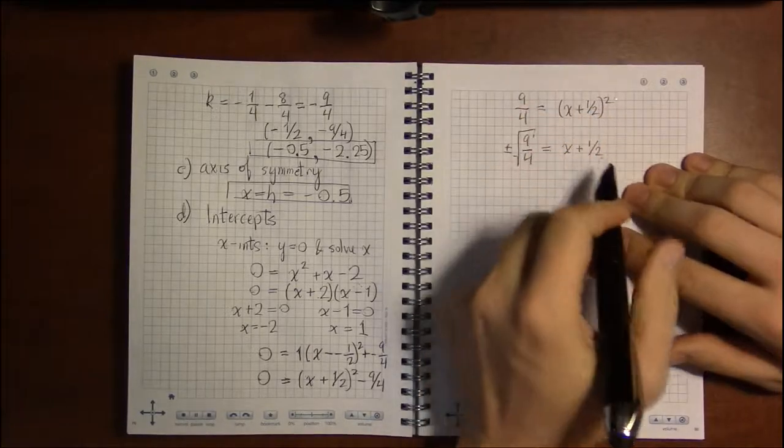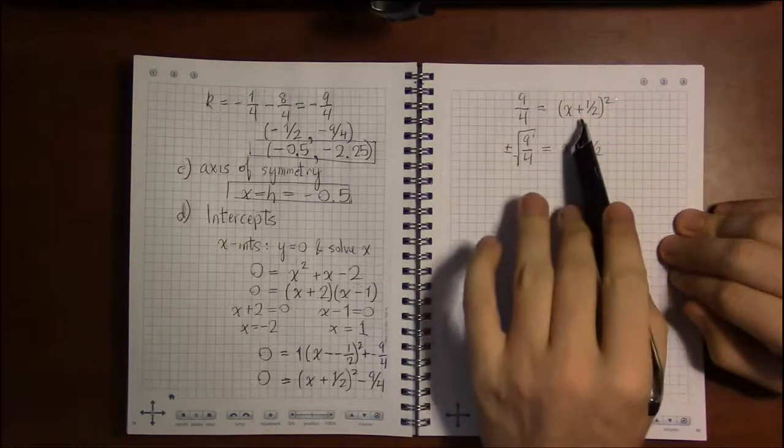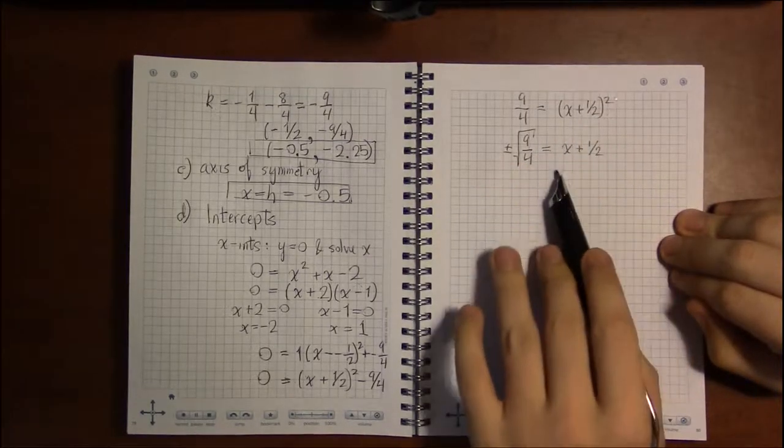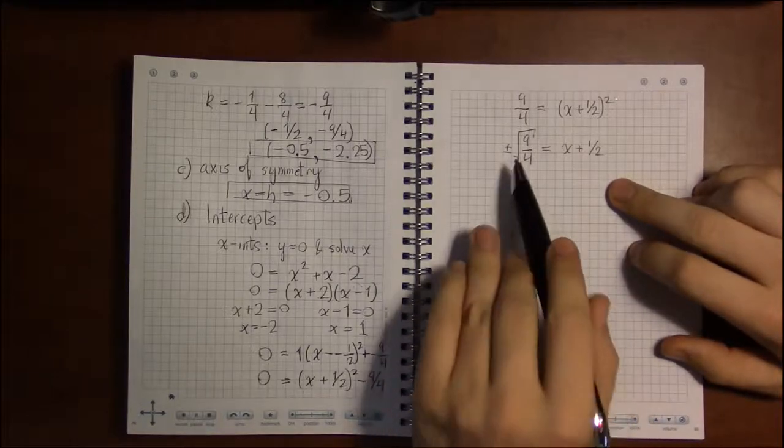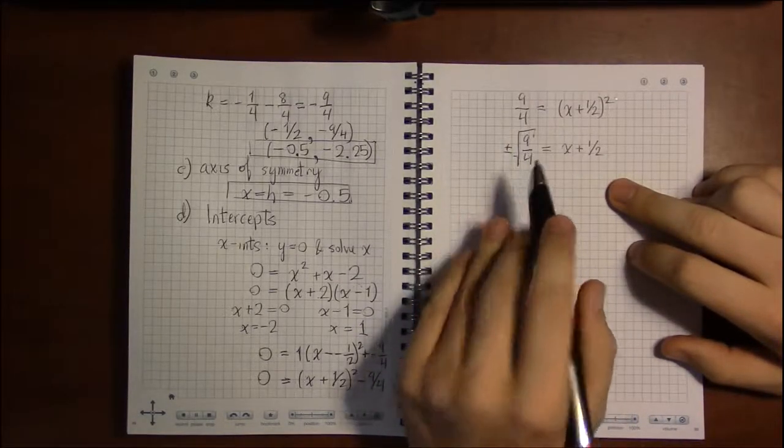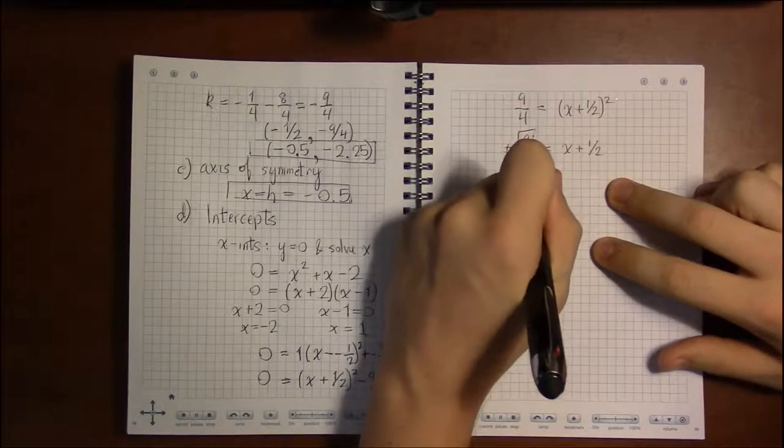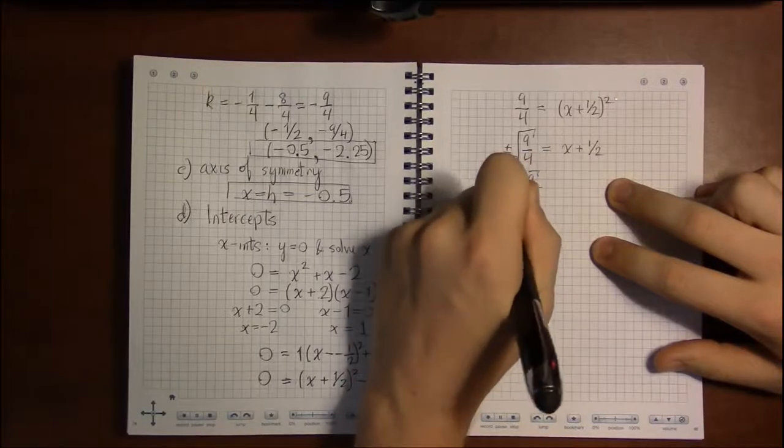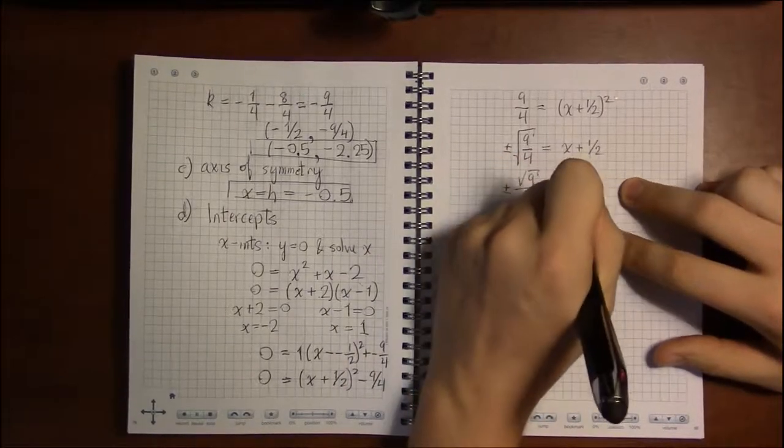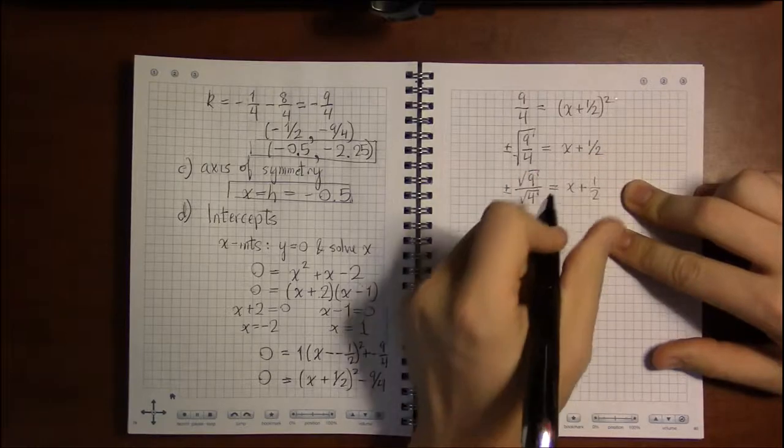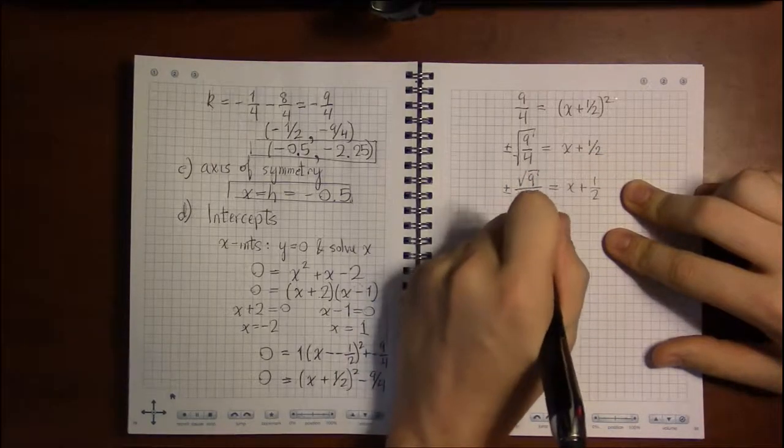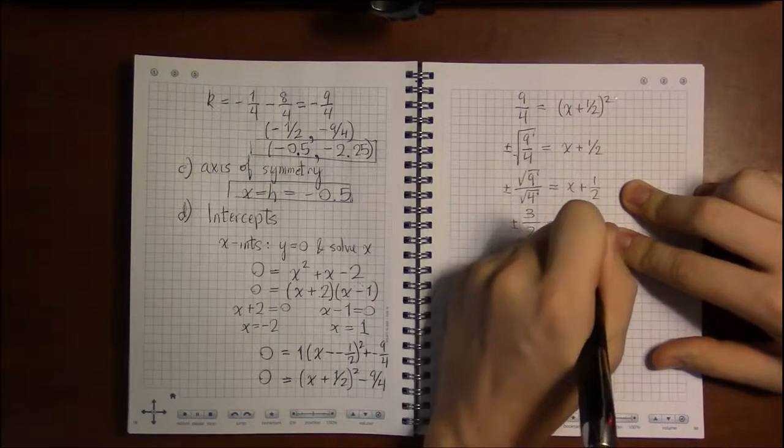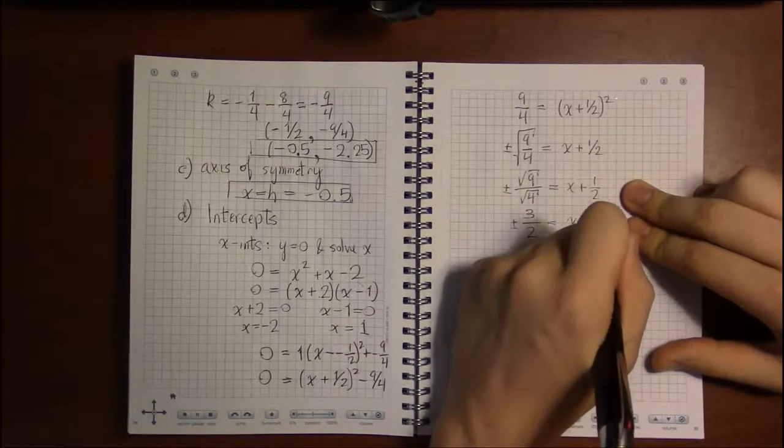And taking the square root of a square just gets rid of the square. So, in this case, the square root of the right hand side is just going to be x plus 1 half. And square root of 9 fourths, square roots play nice with multiplication and division. They distribute, if you will, over multiplication and division. So, square root of 9 is 3. Square root of 4 is 2.